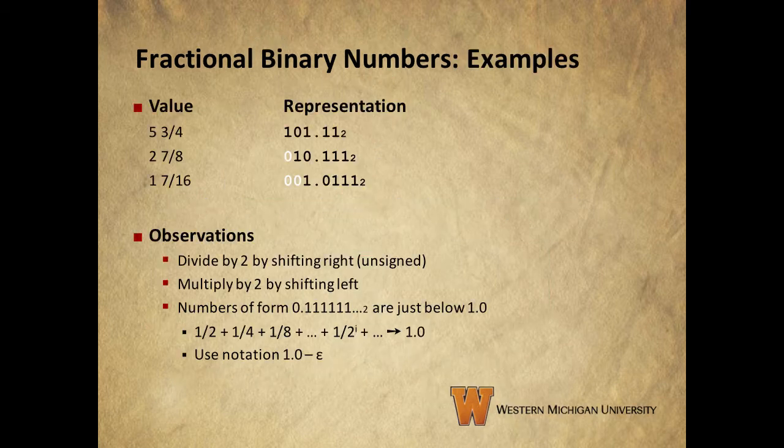These examples show the representation of some fractional values. As you can see, the whole number portion is represented to the left of the binary point as usual, while the fractional parts are to the right of the binary point. Again, the weights to the right are fractional powers of 2, so in the first example, the fractional portion comes from 1 times 1 half, plus 1 times 1 quarter, giving us 3 quarters.